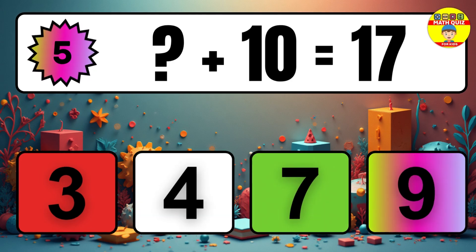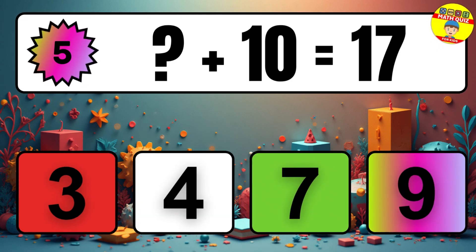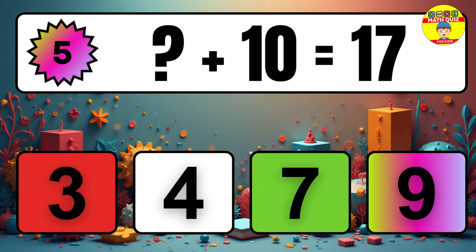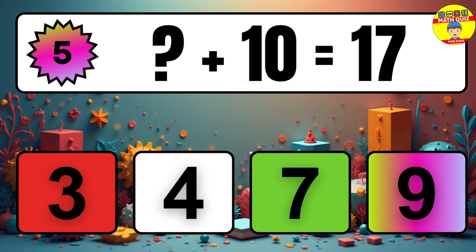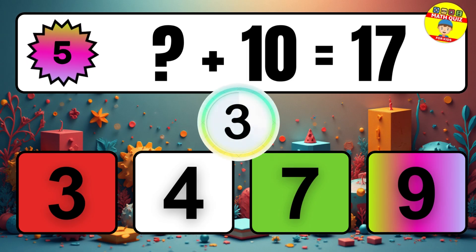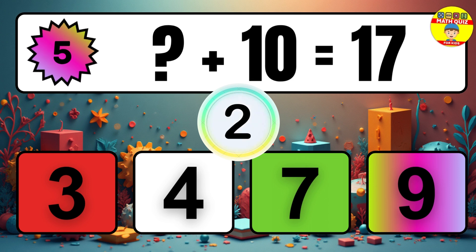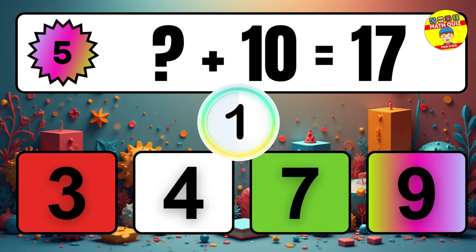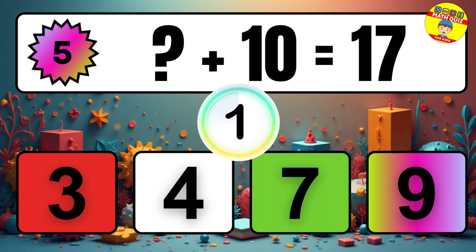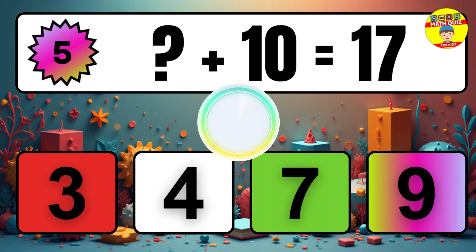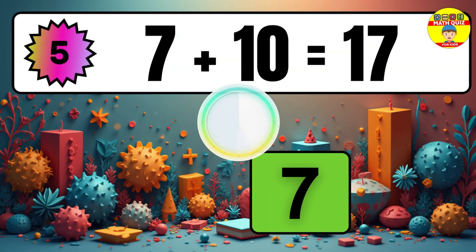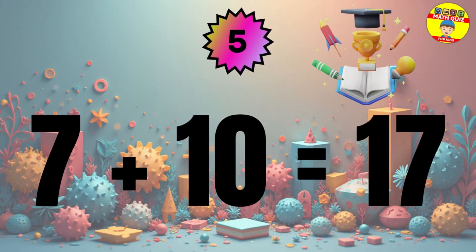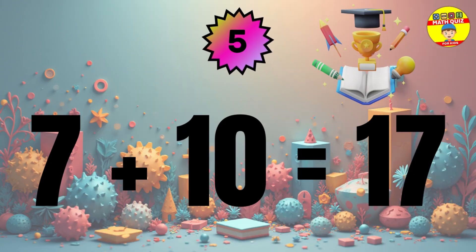Question 5. What number plus 10 equals 17? The missing number is 7.